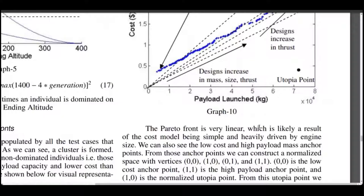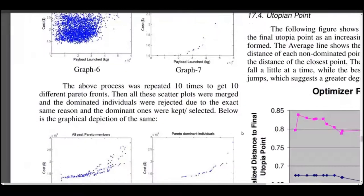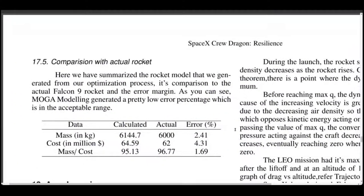In this sample mission report, we have also made a comparison among the results and the actual rocket that was launched. We got an error percentage of 1.69% which was within an agreeable limit.